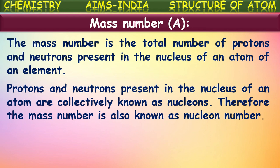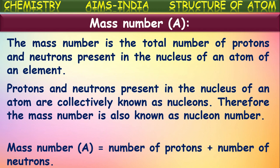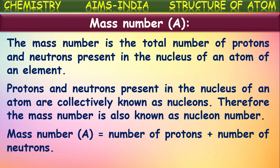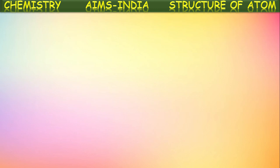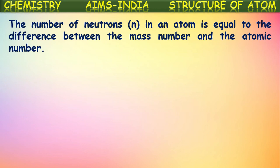Nucleons are nothing but protons plus neutrons. The sum of protons and neutrons is equal to the nucleon number, which is also called mass number. Mass number is represented with capital A. So mass number A is equal to number of protons plus number of neutrons. The number of neutrons in an atom is equal to the difference between the mass number and atomic number. So mathematically, number of neutrons N is equal to mass number A minus atomic number Z.